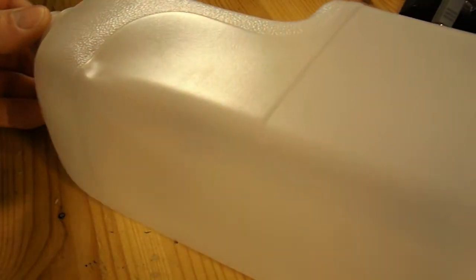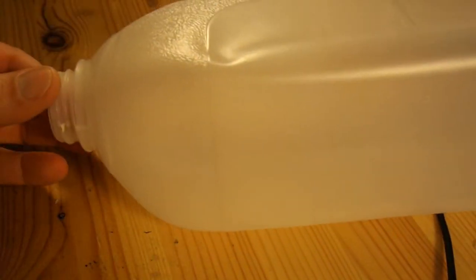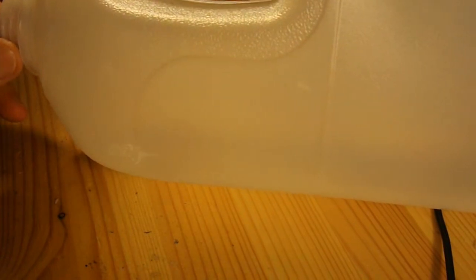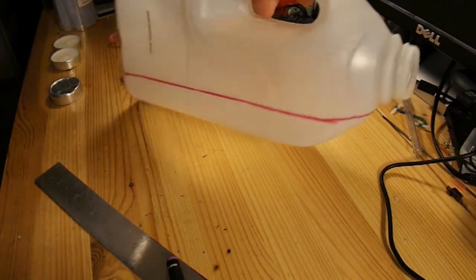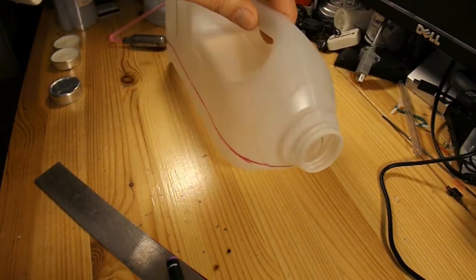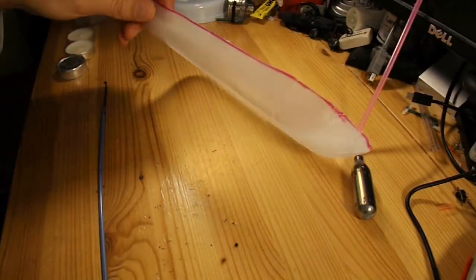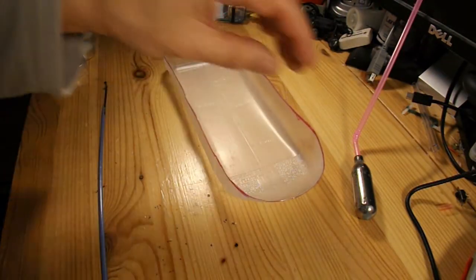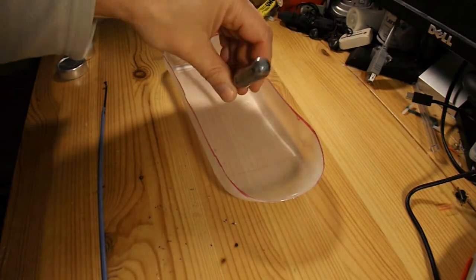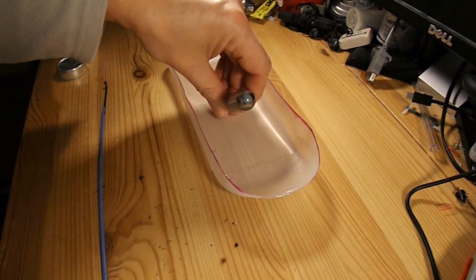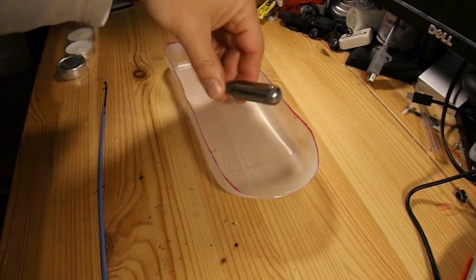For a hull for my boat, I shall use a milk carton. I've drawn a line round it, so we'll cut that out and see if it works. There's our boat. Just drill a hole in it to mount the boiler.